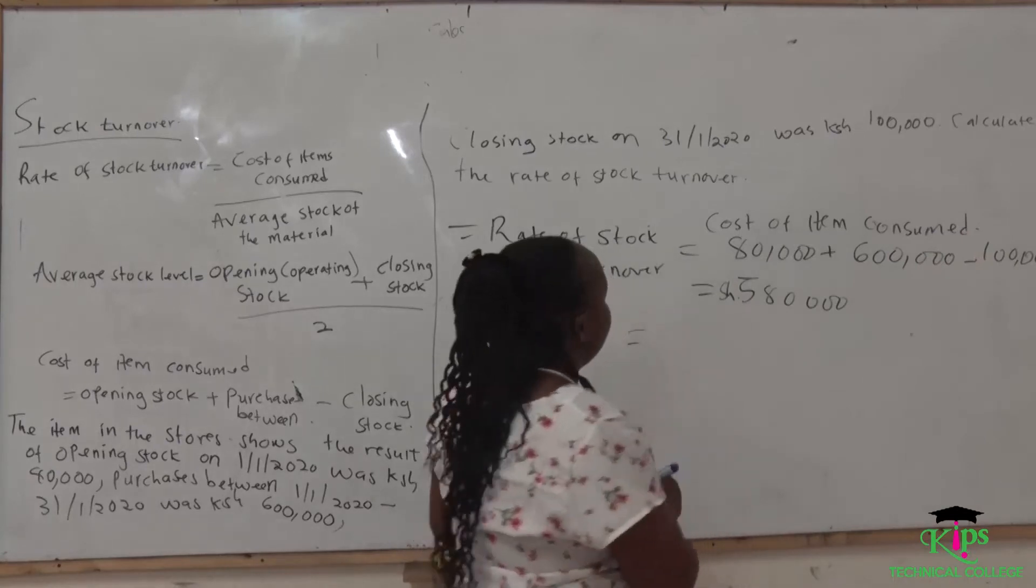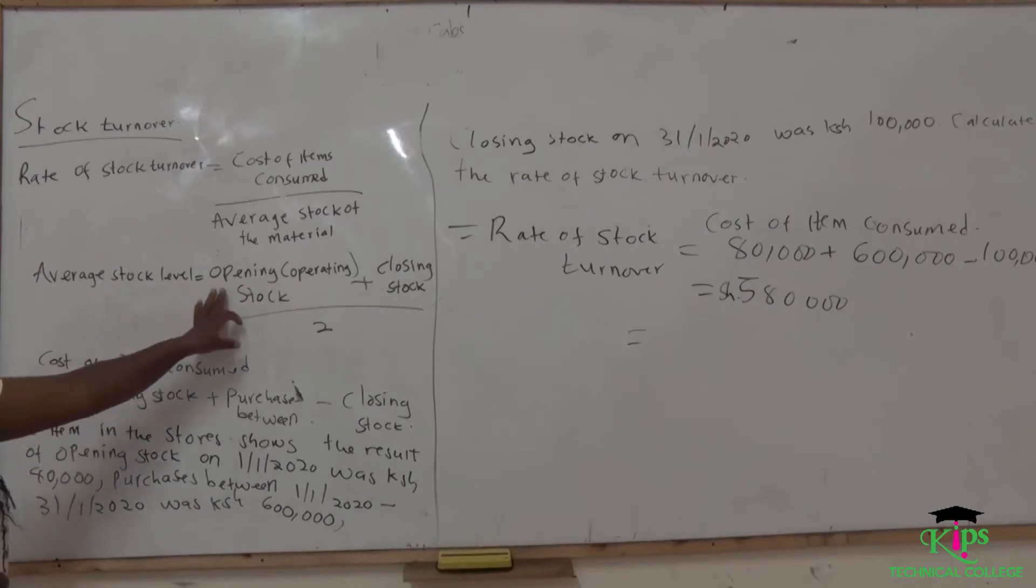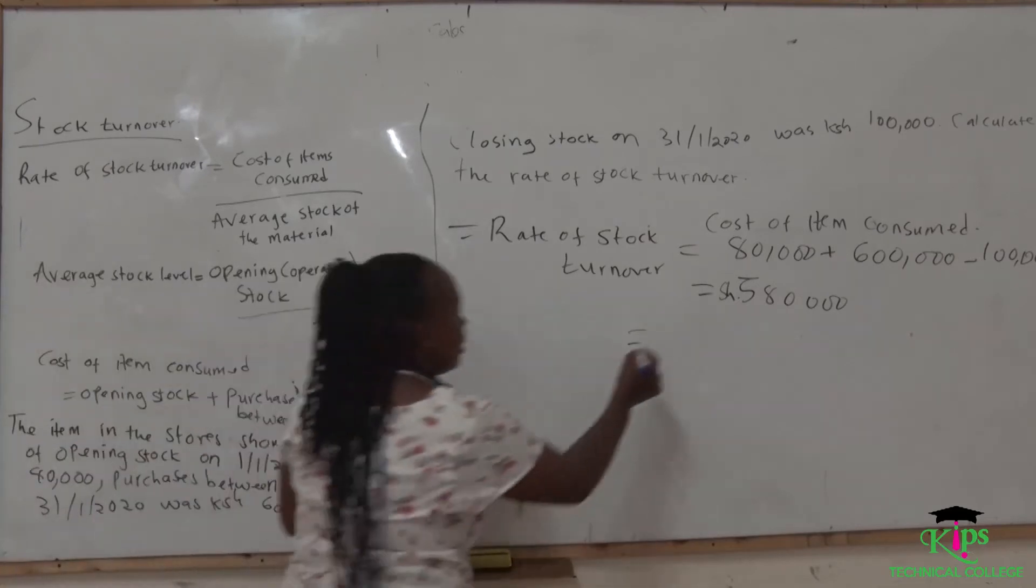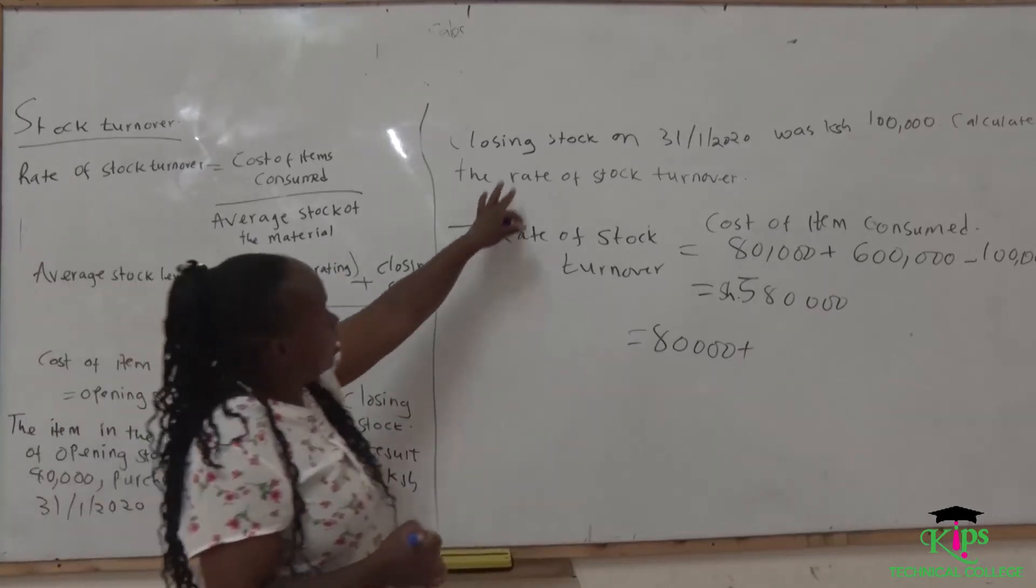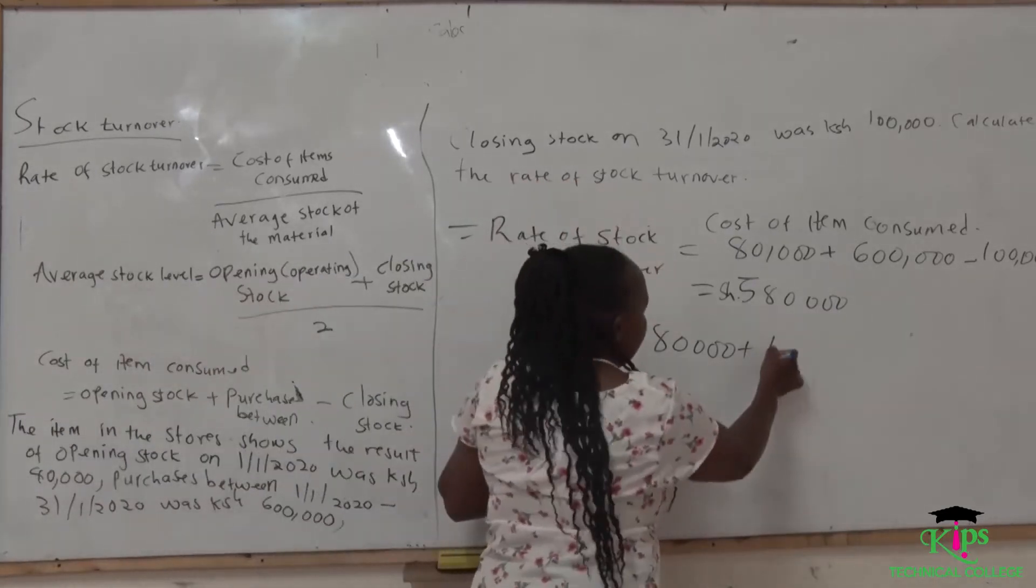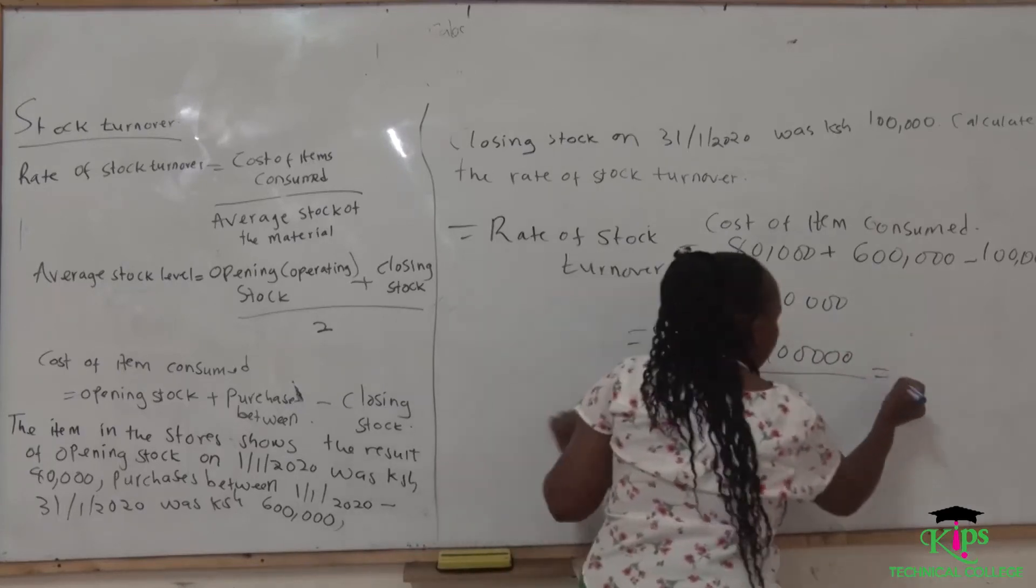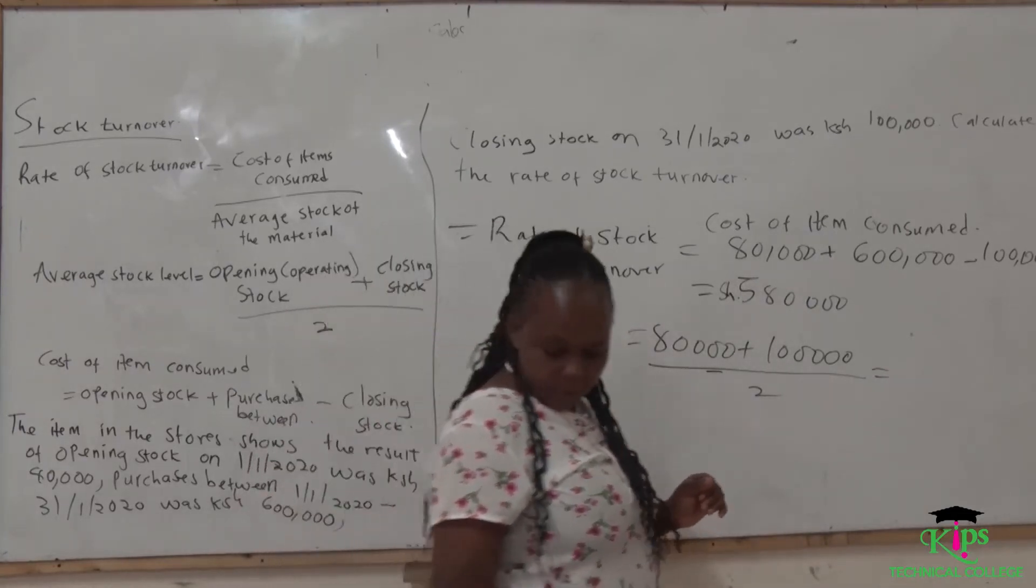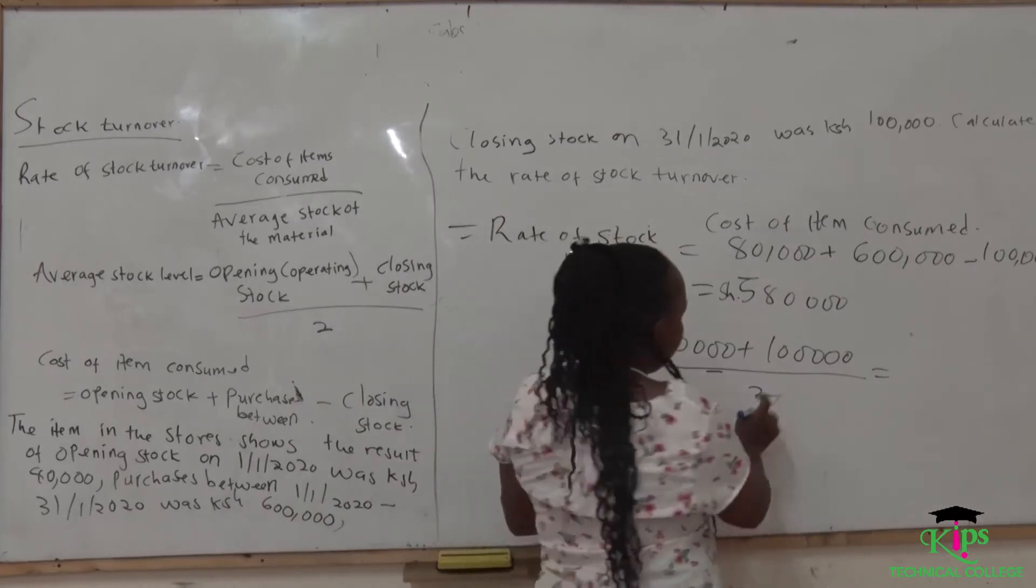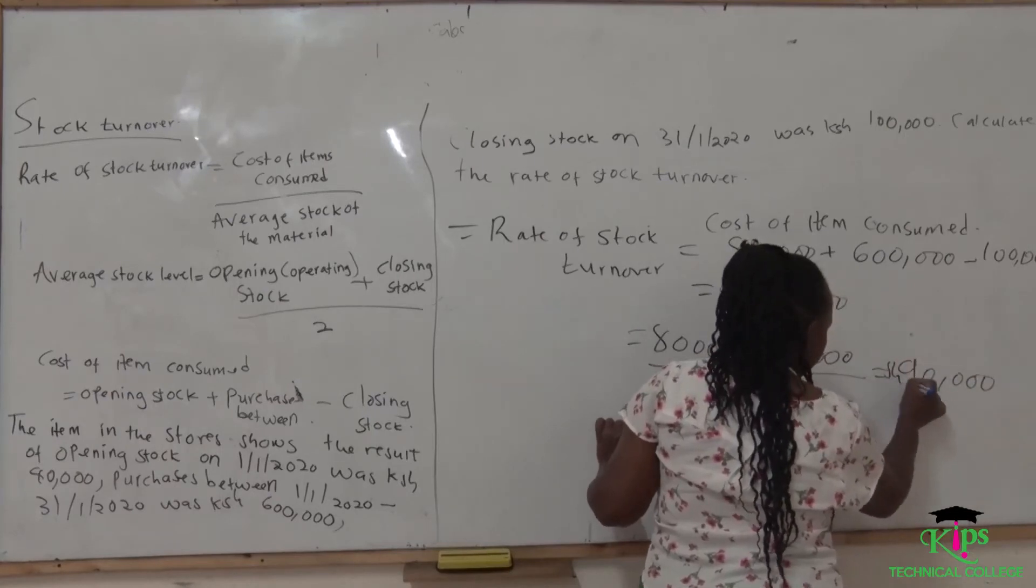Now, we look at the average stock level. The formula of getting the average stock level is equals opening stock. We have our opening stock here, it is $80,000, plus closing stock. And our closing stock is $100,000. So we write $100,000. We divide by 2. When you add them, you are going to get $180,000. When you divide by 2, you are going to get $90,000.